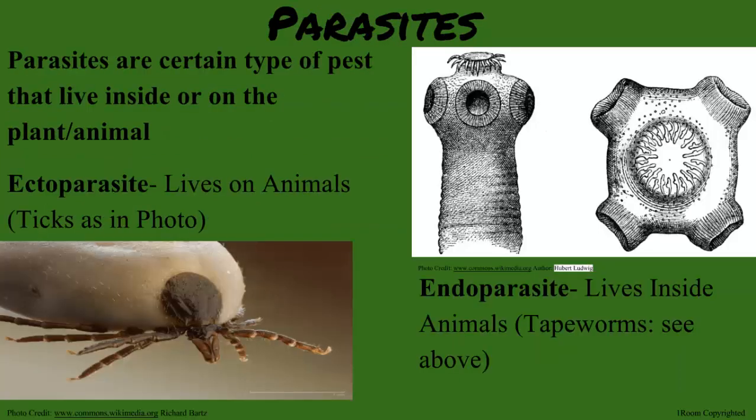Now, parasites are a certain type of pests that live inside or on the plant or animal. Plant parasites live on the plant, while the ones living in the animal are called endoparasites. They include tapeworms, which absorb food from the animal's digestive tract. Ectoparasites live on the animal and suck blood from the animal, which increases their chances to get sick.